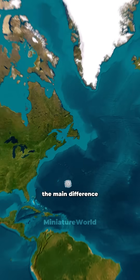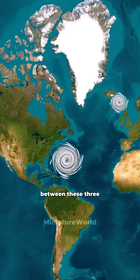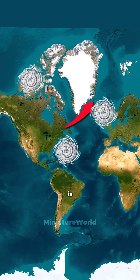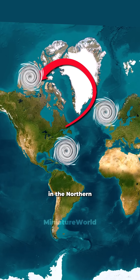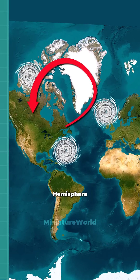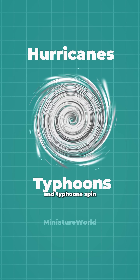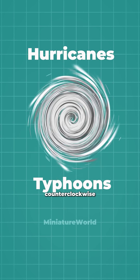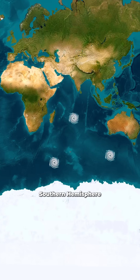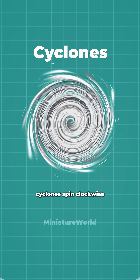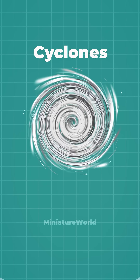The main difference between these three types of storms is that in the Northern Hemisphere, storms like hurricanes and typhoons spin counterclockwise, while in the Southern Hemisphere, cyclones spin clockwise.